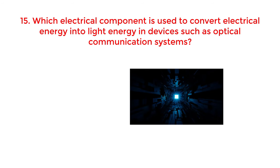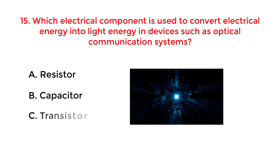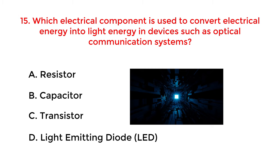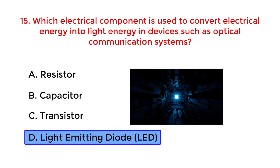Which electrical component is used to convert electrical energy into light energy in devices such as optical communication systems? A. Resistor. B. Capacitor. C. Transistor. D. Light Emitting Diode (LED). The correct answer is option D: Light Emitting Diode (LED).